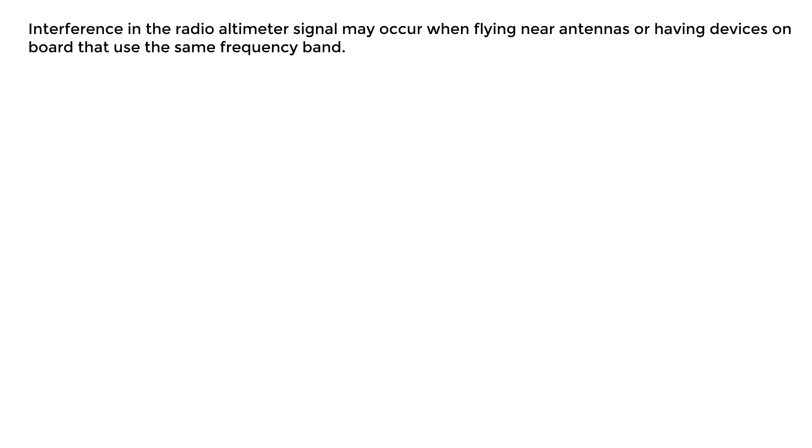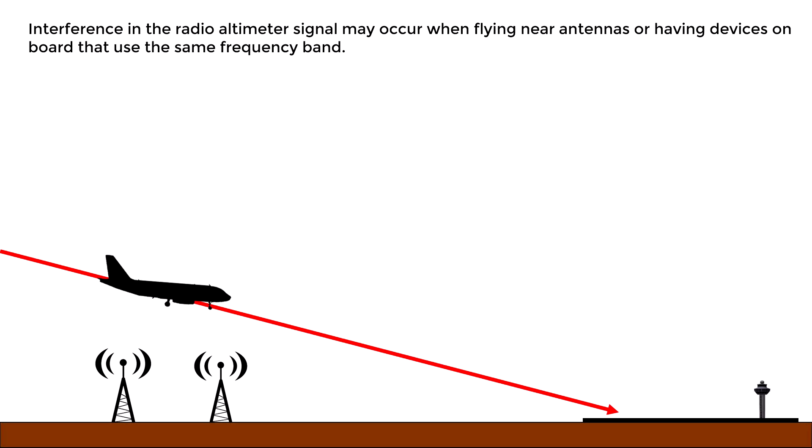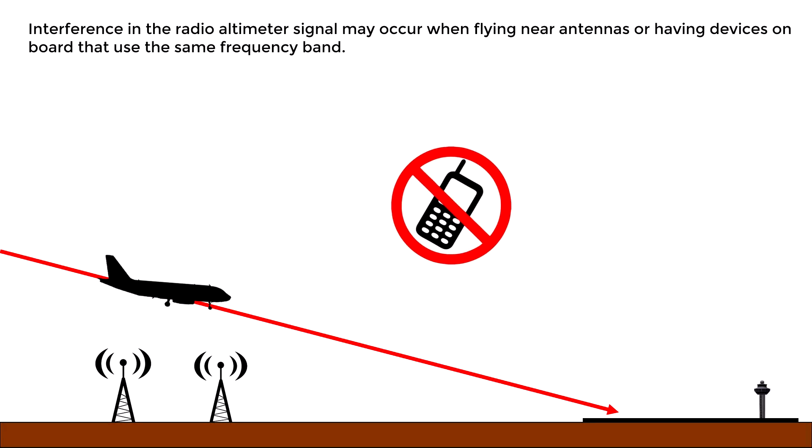Another problem is that when flying near antennas or when having devices on board that use the same frequency band of the radio altimeter, they may interfere with the system. A clear example of this is the 5G mobile network, which uses part of the frequency band of the radio altimeters.